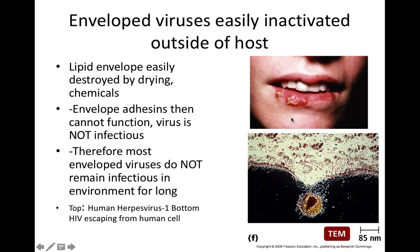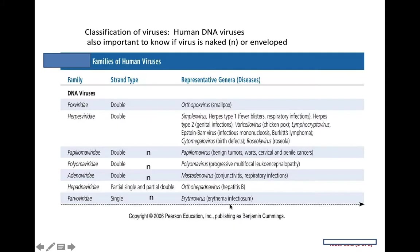Examples of envelope viruses include the herpes virus family, which can cause infections of the mouth, fingers, and genital tract. Because they are enveloped, once shed into the environment and dried out, they are generally no longer infectious. HIV is also an envelope virus, which means it should not remain infectious on surfaces for very long — unless protected by moist organic material such as blood, tissues, or feces.